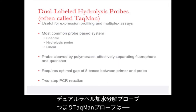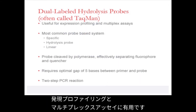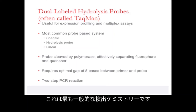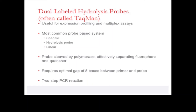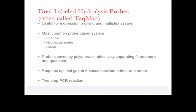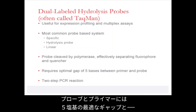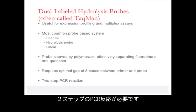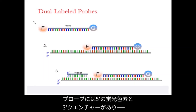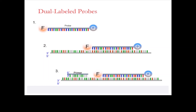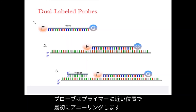The dual-label hydrolysis probe, often called TaqMan probes, are useful for expression profiling and multiplex assays. This is the most common probe-based chemistry. It is specific and the probes are hydrolyzed during detection. The probe is cleaved during polymerization, effectively separating the fluorophore from the quencher, which allows it to fluoresce. This schematic diagram shows you how dual-label fluorescent probes work. The probe has a fluorophore at the five prime end and a quencher at the three prime end, effectively preventing fluorescence. The probe anneals first, ensuring it is on the sequence near the primer.